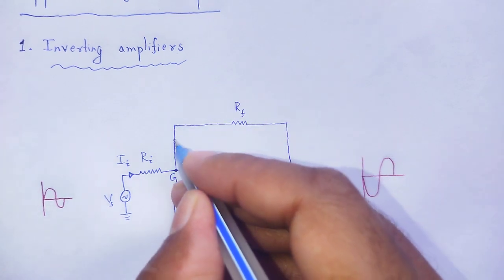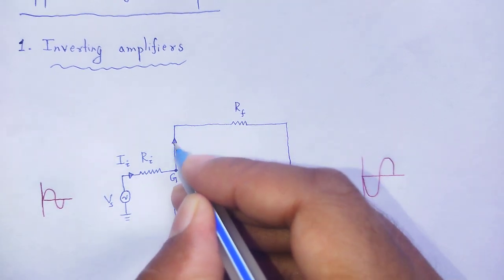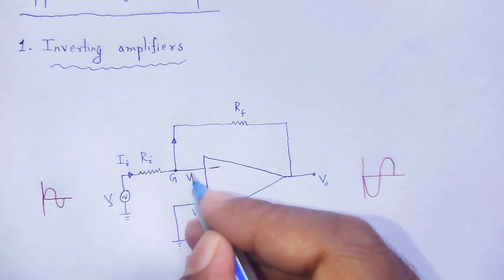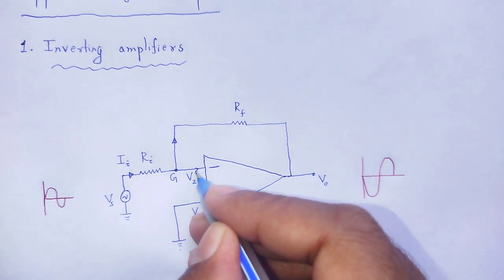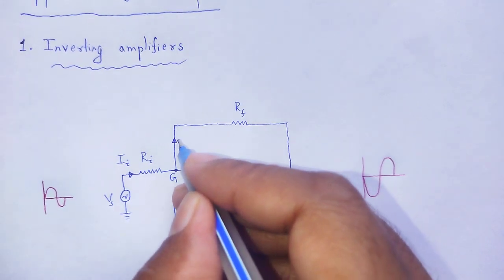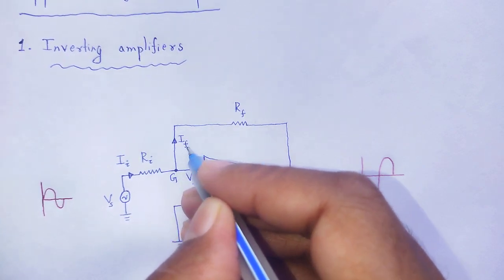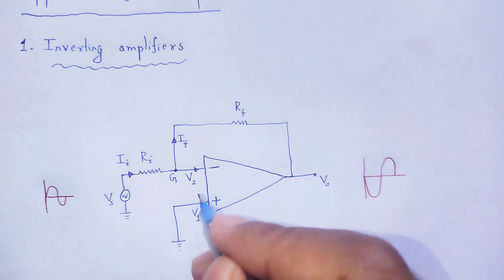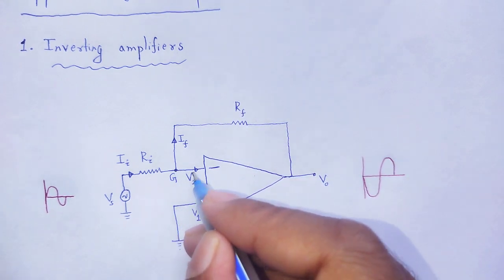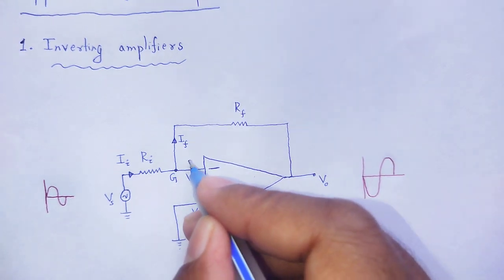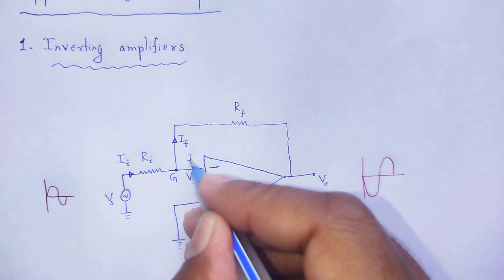Some amount of current flows through this and some amount of current to that end. Let that amount of current be feedback current If to that of feedback resistance. Next, some amount of current to that of amplifier as Ib.